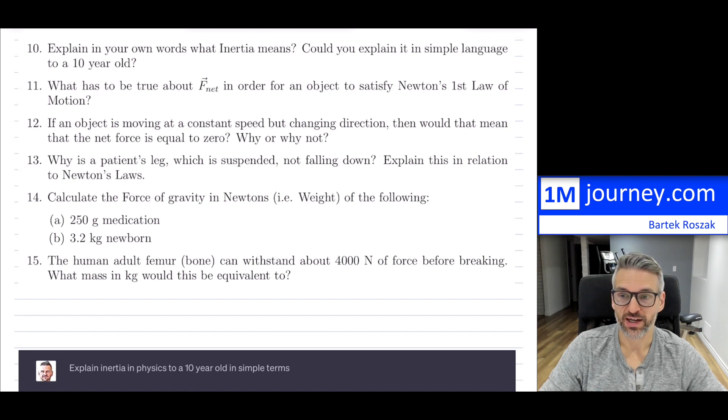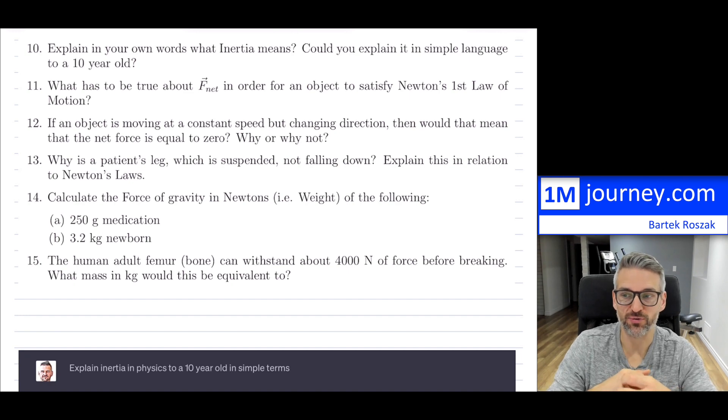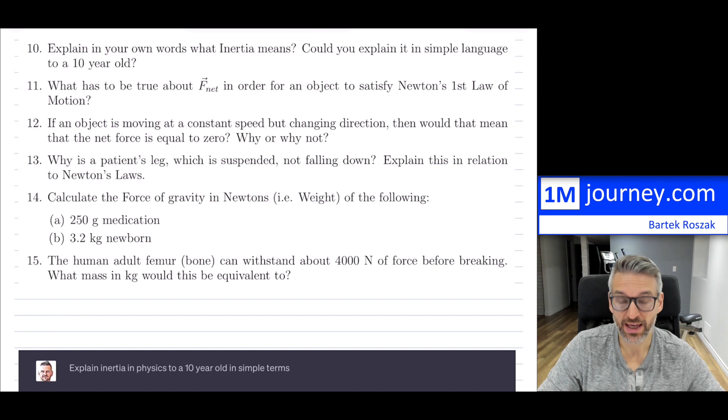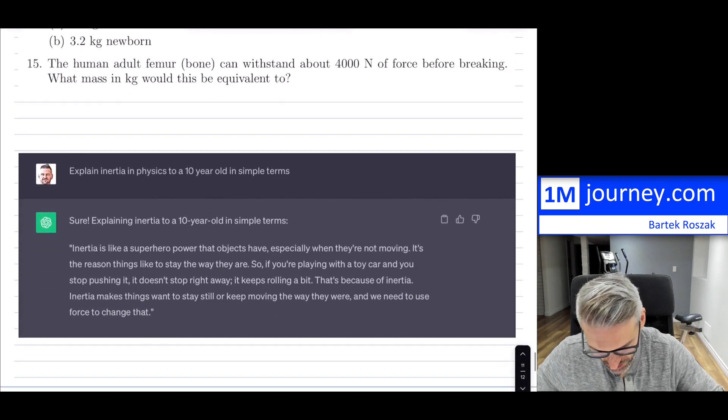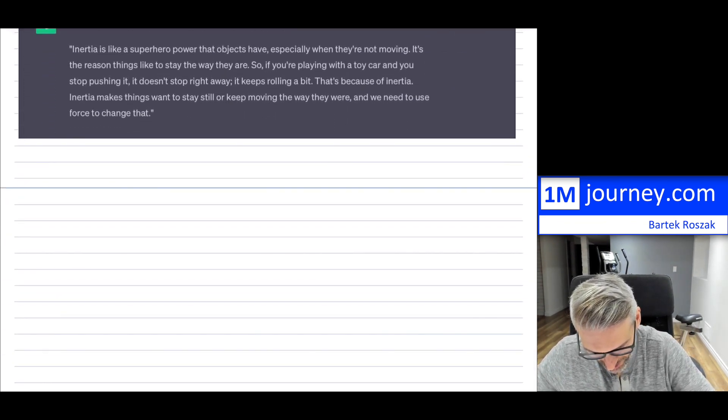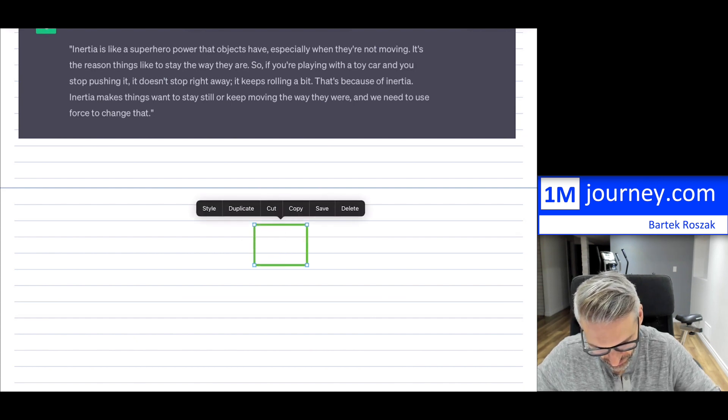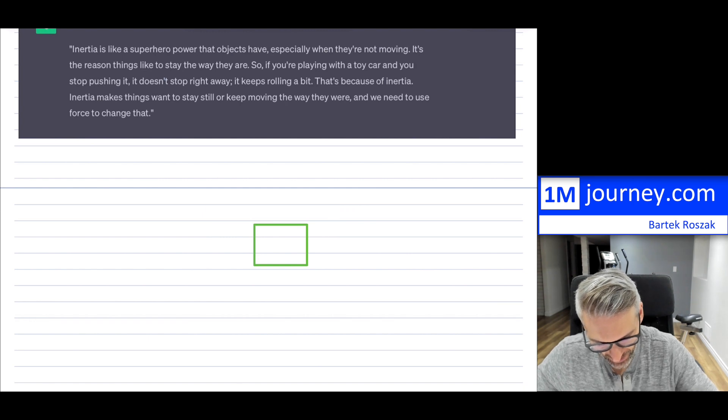Question 13: Why is a patient's leg which is suspended not falling down? Explain this in relation to Newton's laws. If you take a leg and you suspend it down, I'll draw it as a free body diagram. Let's say we have something like this—obviously this is not the leg but it's suspended.